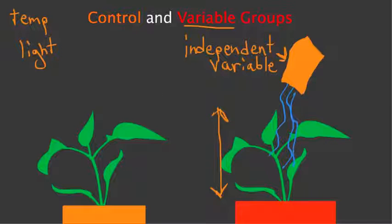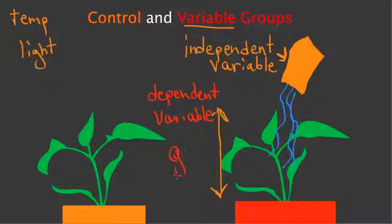I'll switch colors here. All right, so the dependent variable is how much the plant is growing, growth.